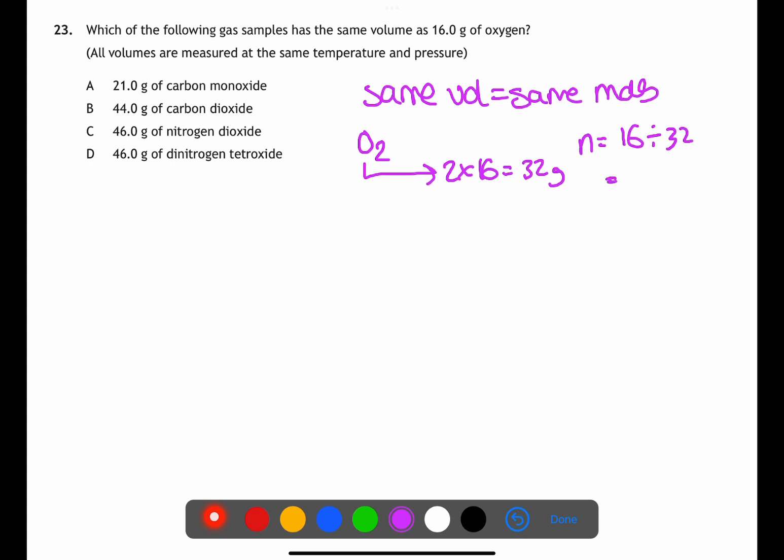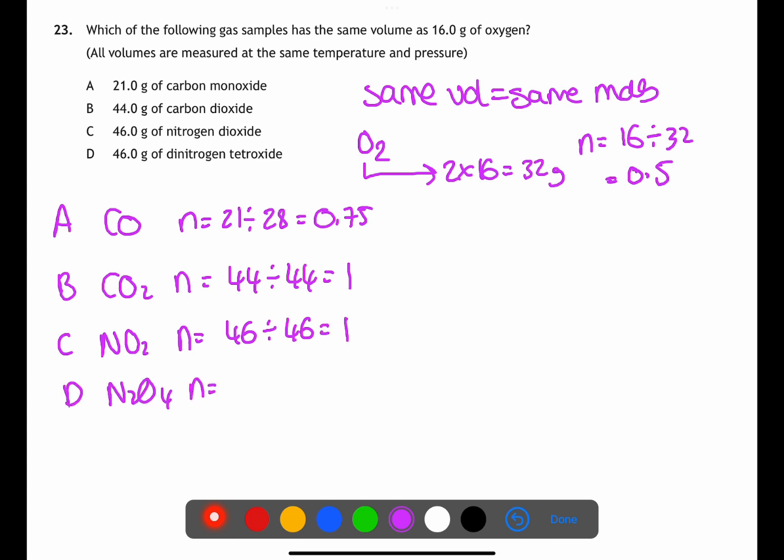For each of the gases we need to calculate the gram formula mass and the number of moles. A is carbon monoxide CO. This is a gram formula mass of 28. This means the number of moles is 21 divided by 28 which is 0.75 moles. B is carbon dioxide CO2. This is a gram formula mass of 44 meaning that there is one mole within the 44 grams. C is nitrogen dioxide with a gram formula mass of 46. So this is also one mole. And D is dinitrogen tetroxide N2O4. This is a gram formula mass of 92 and therefore has a number of moles of 0.5.